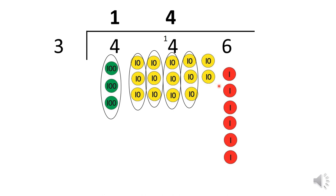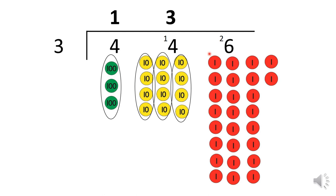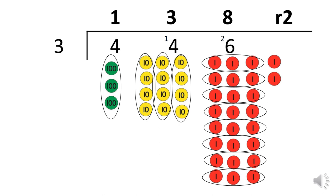I can make four groups of three and I have two tens left over, so this gets moved to the ones column. I now have 26 ones. How many threes can I get in 26 ones? I can make eight groups of three and I have two left over — these two are my remainder, which I put up here. So 446 divided by three is 138, remainder two.